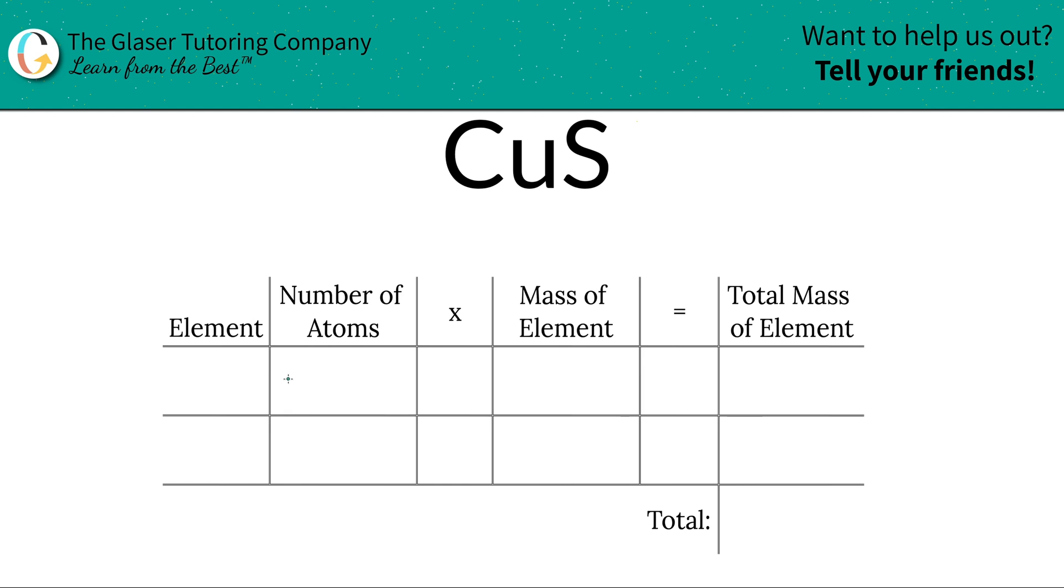Bam. So the first thing I'm going to do is write down the element or elements that I see in the compound. So we have copper and we have sulfur.